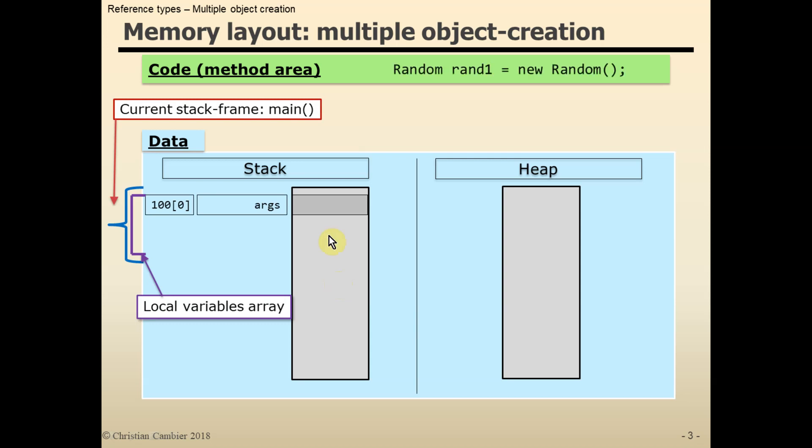Let's execute the first statement, the creation of our first random object. As explained in a previous demo, due to the declaration of the local variable rand1, it will be stored at the second position in the local variables array.